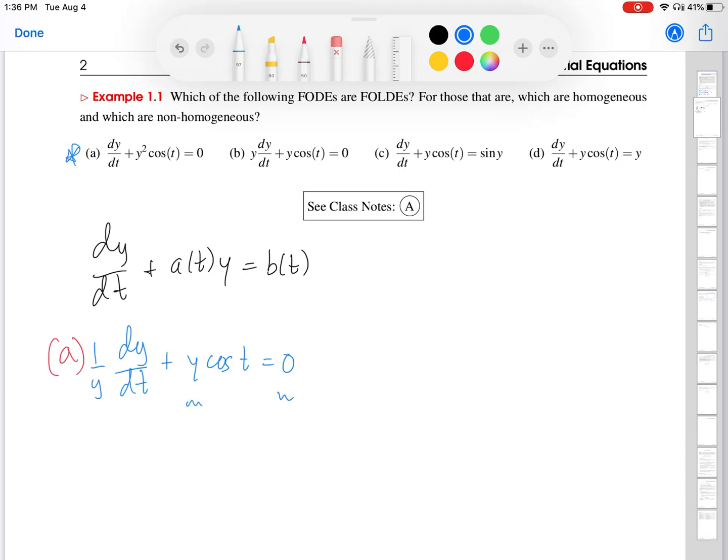What you might try to do is divide the ODE by Y. Great. That gets you the Y there. 0 over Y is 0. But now you have a 1 over Y there. And it does not match this standard form. So, no matter which way you slice it, this ODE for part A is not linear. So, we are going to say that this is not a fold.